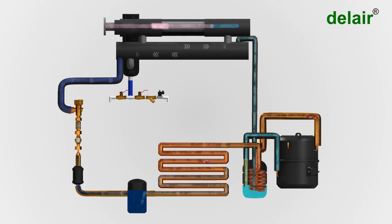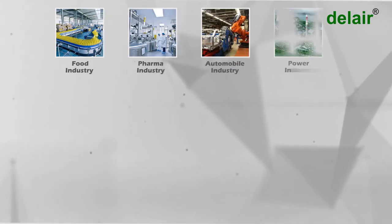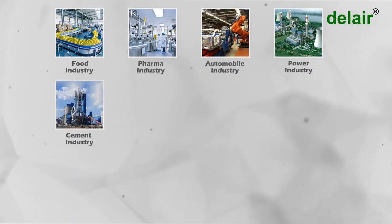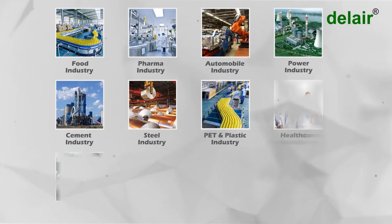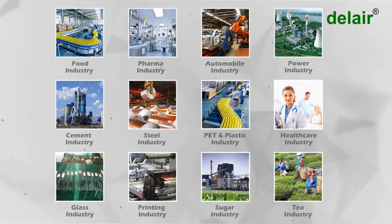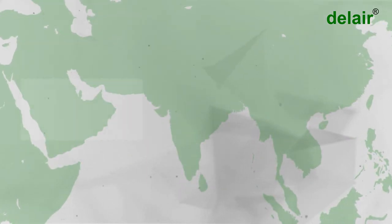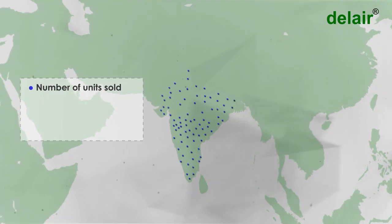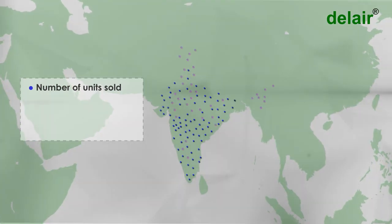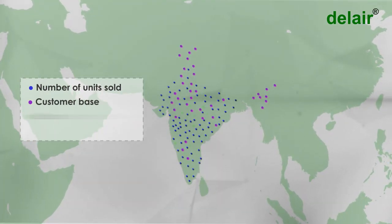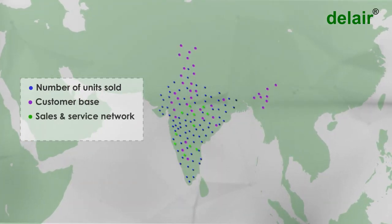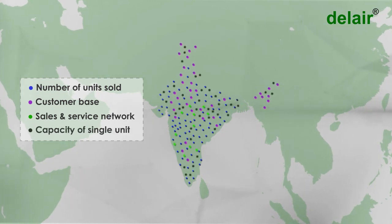The dry air can be used for desired applications in various industries like food, pharma, automobile, power, cement, steel, PET and plastic, and dozens of other industries. No wonder Del Air is largest in terms of number of units sold, customer base, sales and service network, and capacity of single unit.